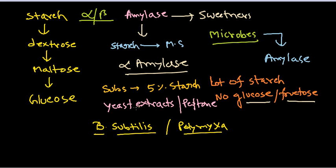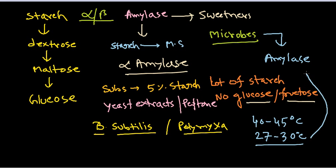We grow Bacillus subtilis in the 5% starch mixture with yeast extract, peptone, and salts. The optimum temperature for Bacillus subtilis to grow is 40–45°C, but the optimum temperature for amylase production is 27–30°C. So we first grow the culture rapidly at 40–45°C for a shorter duration, then shift to 27–30°C so that more and more amylase is produced.